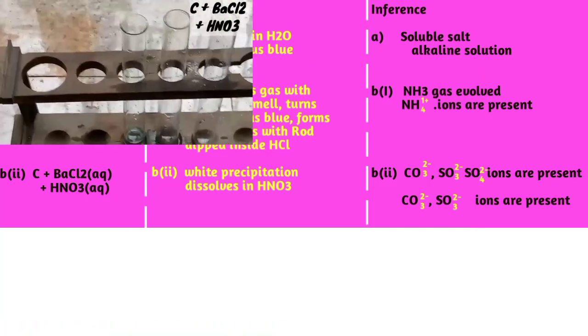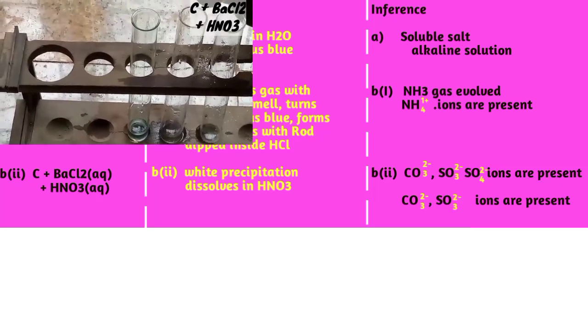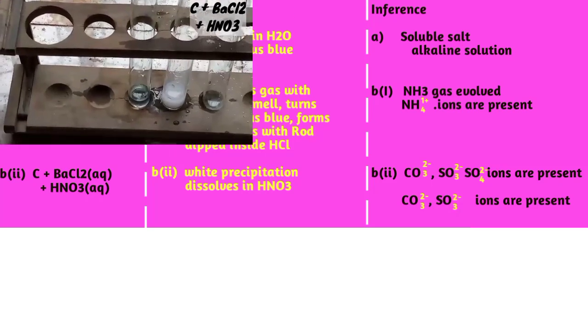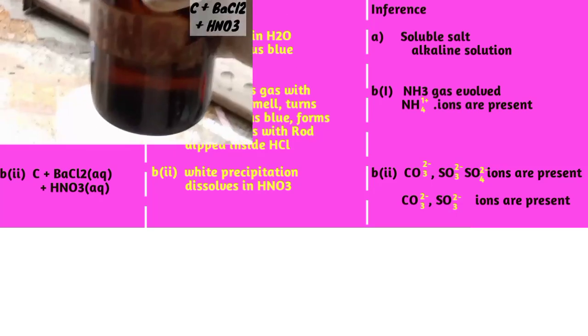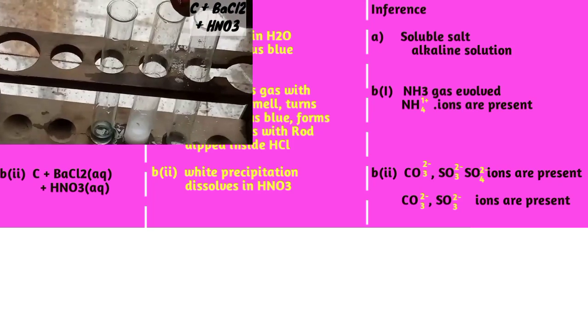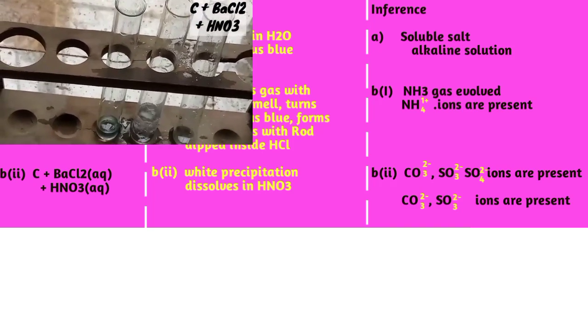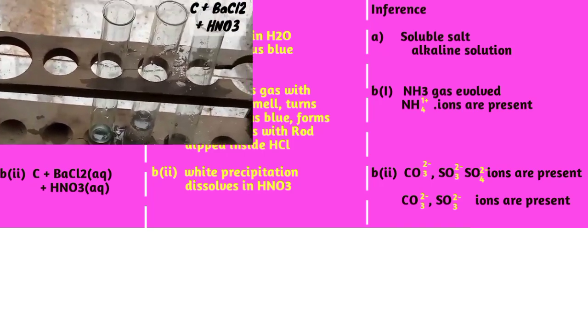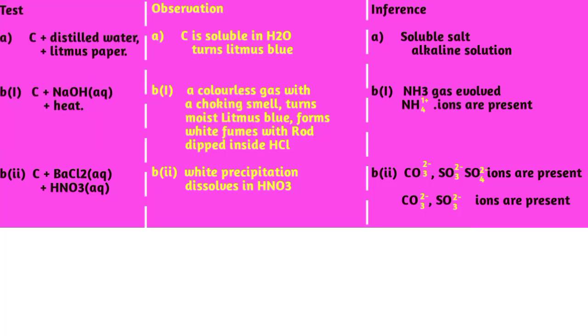For the same exercise, followed by dilute trioxonitrate five acid, you will notice a white precipitation which suggests CO3²⁻, SO3²⁻, SO4²⁻ present. Remember they ask you to add trioxonitrate five, so we suspect CO3²⁻ and SO3²⁻ present.